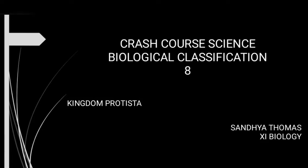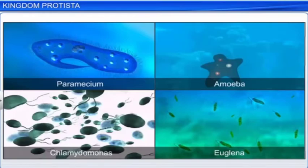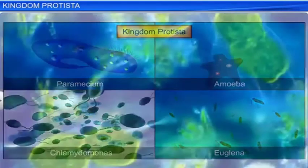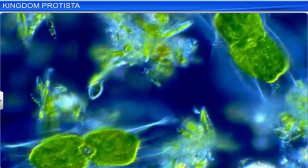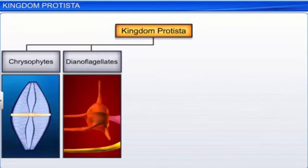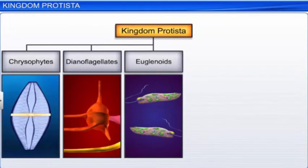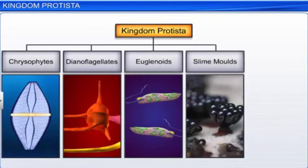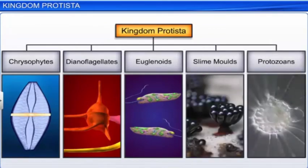Biological Classification, Session 8. In this module, we will recapitulate the general features of Kingdom Protista. All unicellular eukaryotes come under Kingdom Protista. Members under Kingdom Protista are primarily aquatic. Chrysophytes, Dinoflagellates, Euglenoids, Slime Molds and Protozoans are the few categories of Protists.